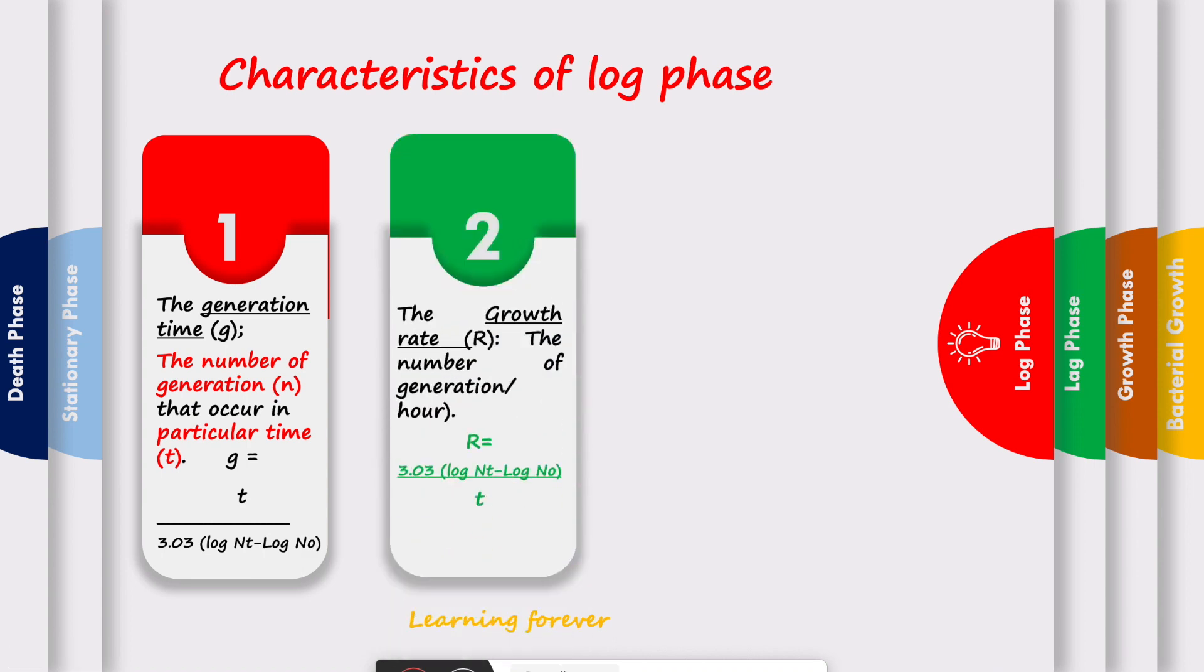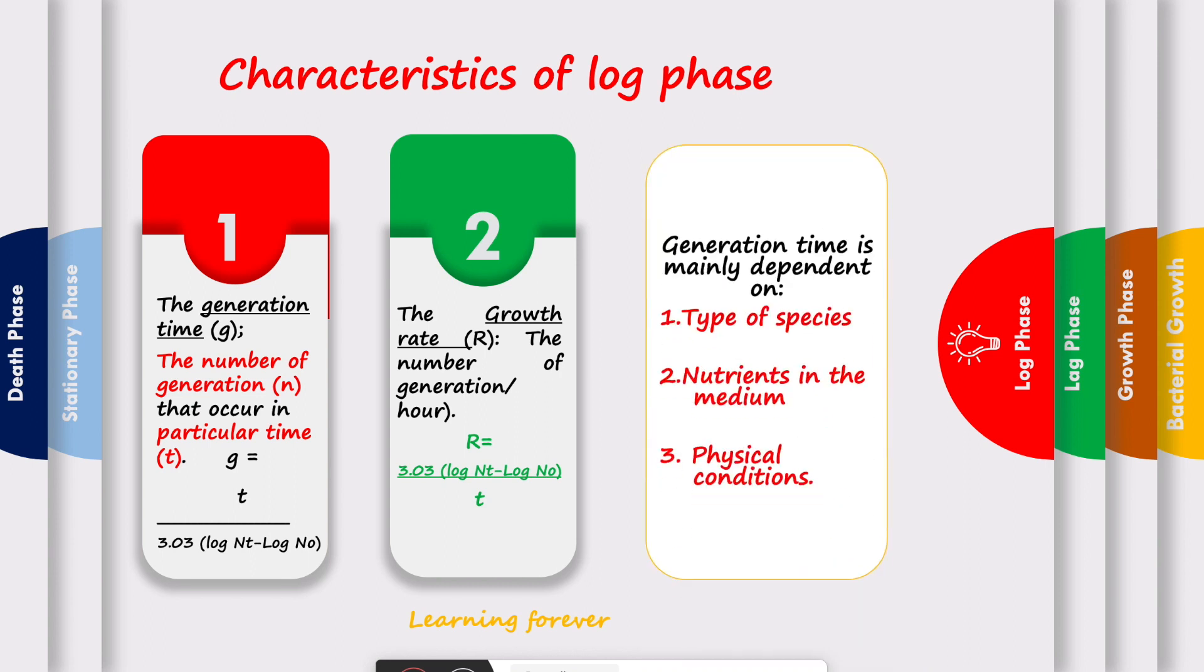Second characteristic is the growth rate. The growth rate is the number of generations per hour. It is calculated mathematically as r equals 3.03 log of nt minus log of n0 divided by t. Generation time mainly depends upon type of species, nutrients in the medium, and physical conditions.